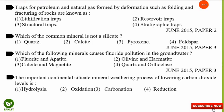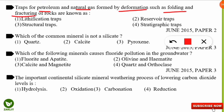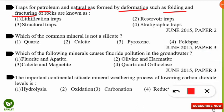The next question: traps for petroleum and natural gas formed by deformation such as folding and fracturing of rocks are known as what? The correct option is structural traps — since the structure is deformed, they are called structural traps.